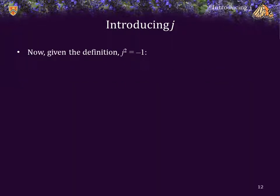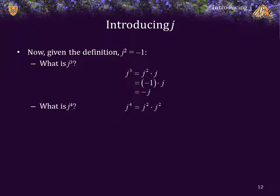Given that j squared is equal to negative 1, what is j cubed? j cubed is just j squared times j. j squared equals negative 1, and negative 1 times j is just negative j. What's j to the 4th? j to the 4th can be written as j squared times j squared. Each of those is negative 1. Negative 1 times negative 1 is 1. So j to the 4th is 1.